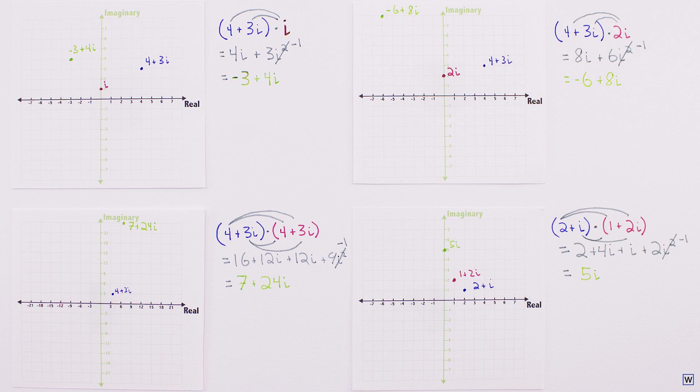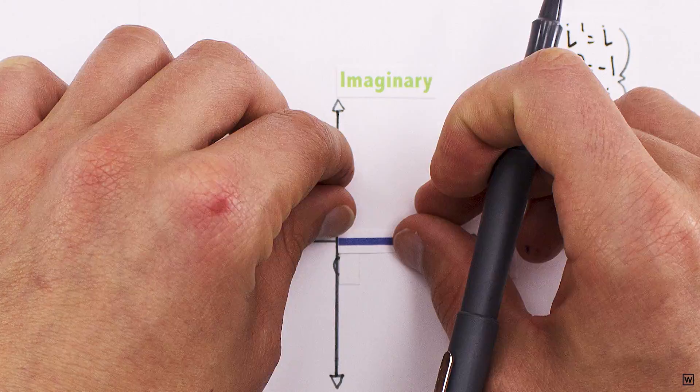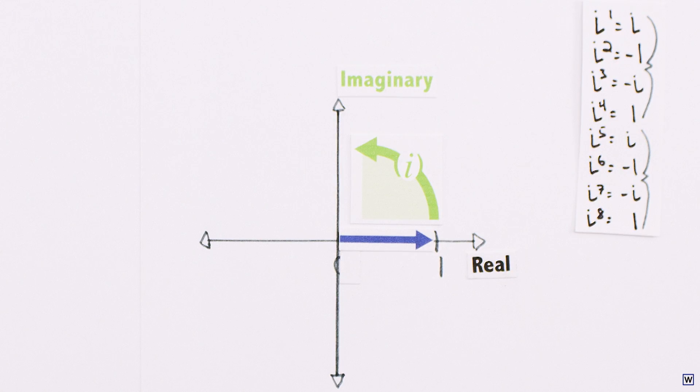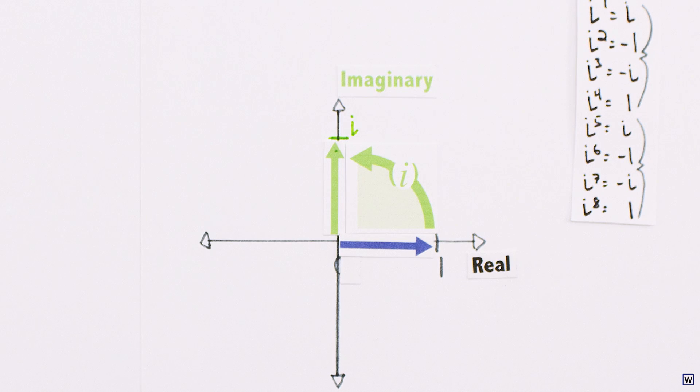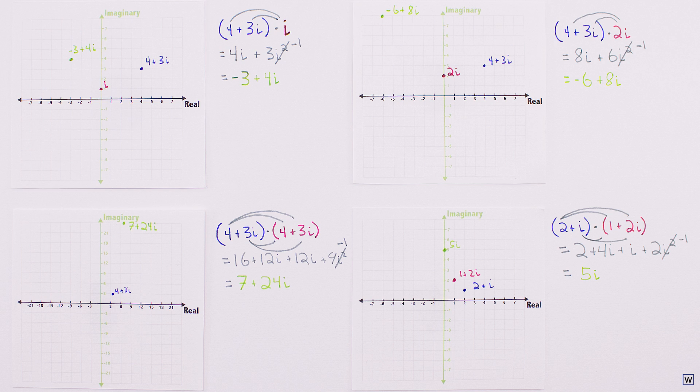Our job now is to look for patterns. Back in Part 5, we learned that i has something to do with rotation on the complex plane. So a good thing to keep track of here will be the angle our complex numbers make with the real axis.